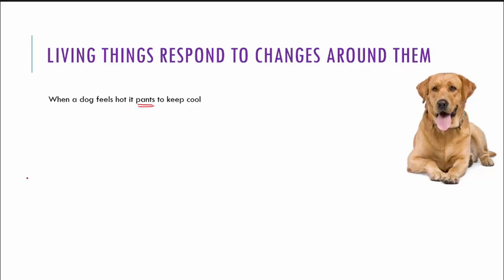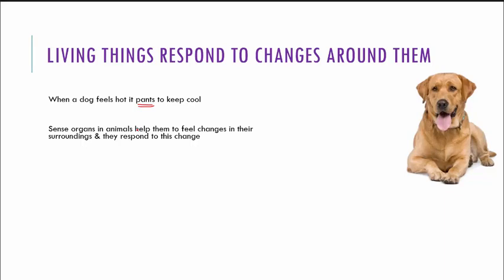Now let's think of another example. What will you do if somebody threw a stone at you? You're going to duck to avoid the stone from hitting you. This is because sense organs in animals help them feel, so they respond. When you see the stone coming towards you, it's the sense of vision that causes you to duck to avoid that stone. We have several sense organs in us which help us feel the changes around us, because of which we respond to the change.